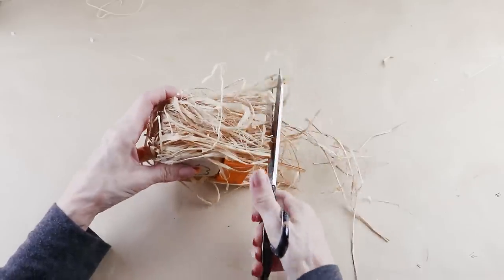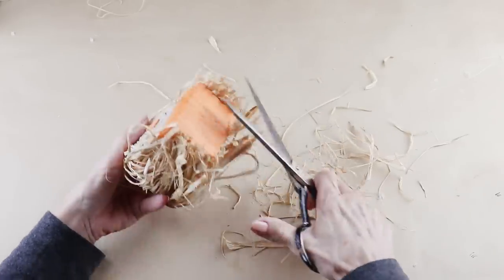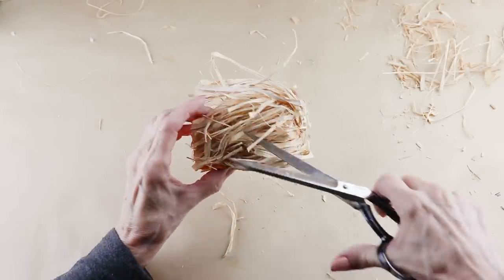To neaten up the raffia hair, I'm now using my scissors and cutting it flush with the bottom of the base. Once that was done, I then cut all the raffia loops.